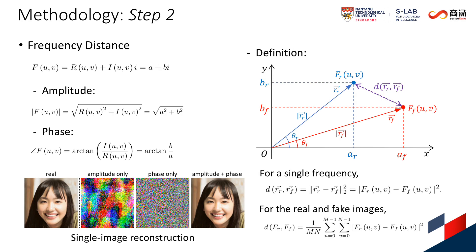Our solution is to map each frequency value to a Euclidean vector in a two-dimensional space. The vector magnitude and angle correspond to the amplitude and phase respectively. Thus, the frequency distance corresponds to the distance between two vectors. We simply apply the squared Euclidean distance.